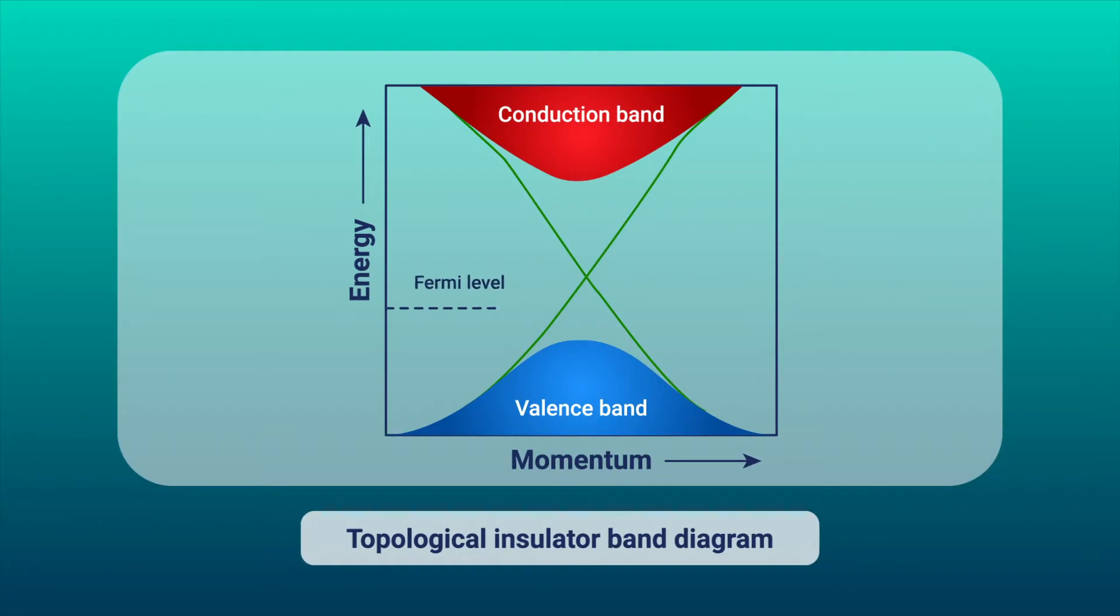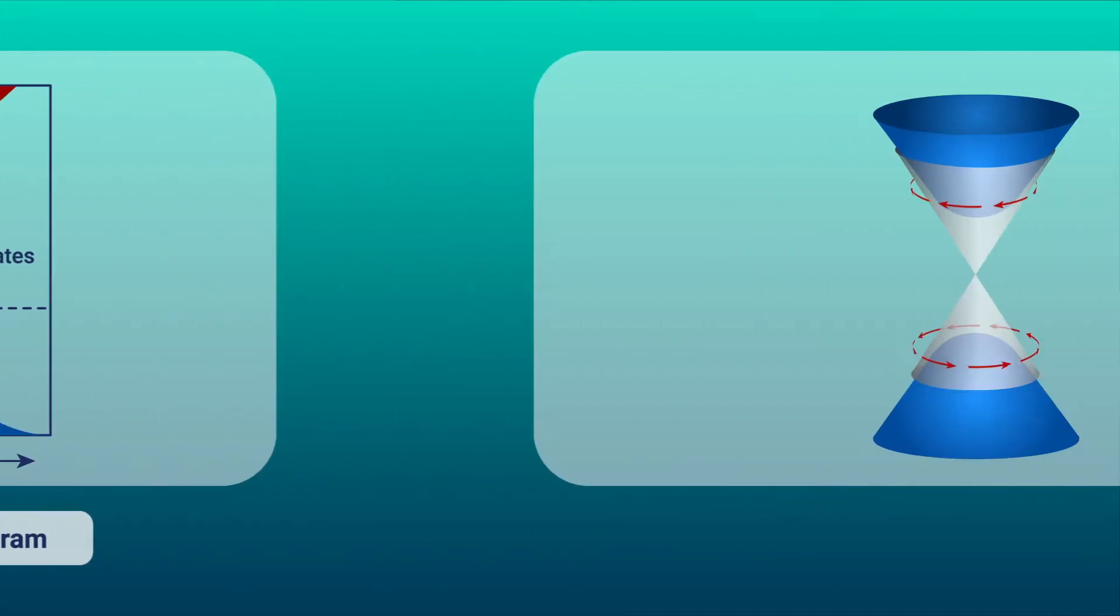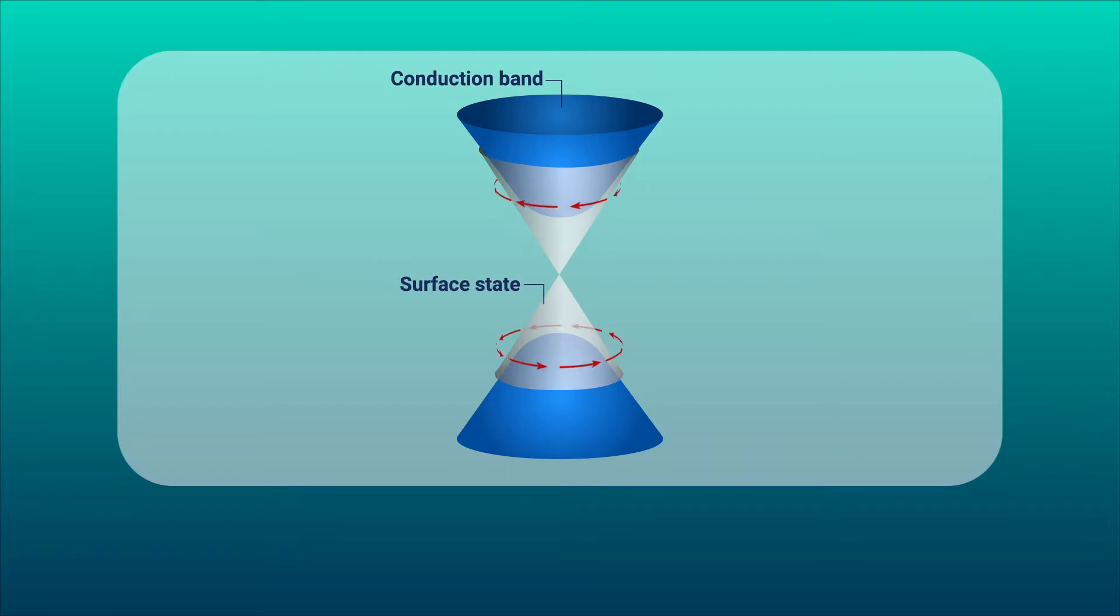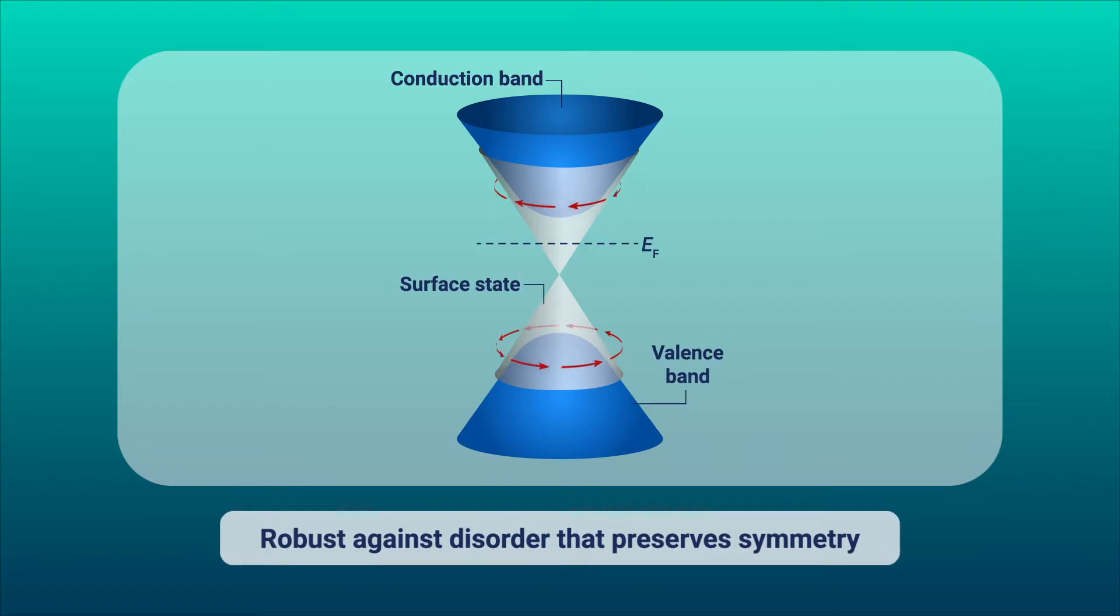A well-known example of SPT phases comes from topological insulators, materials that show metallic surface states that are robust against disorder effects that do not break the symmetry.